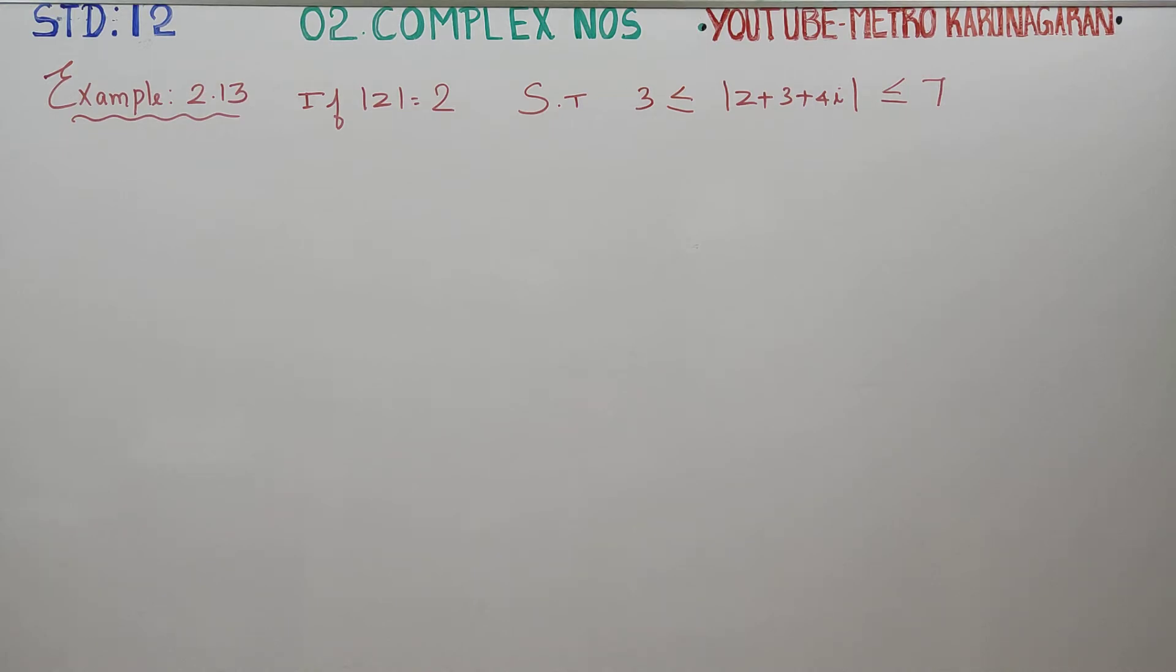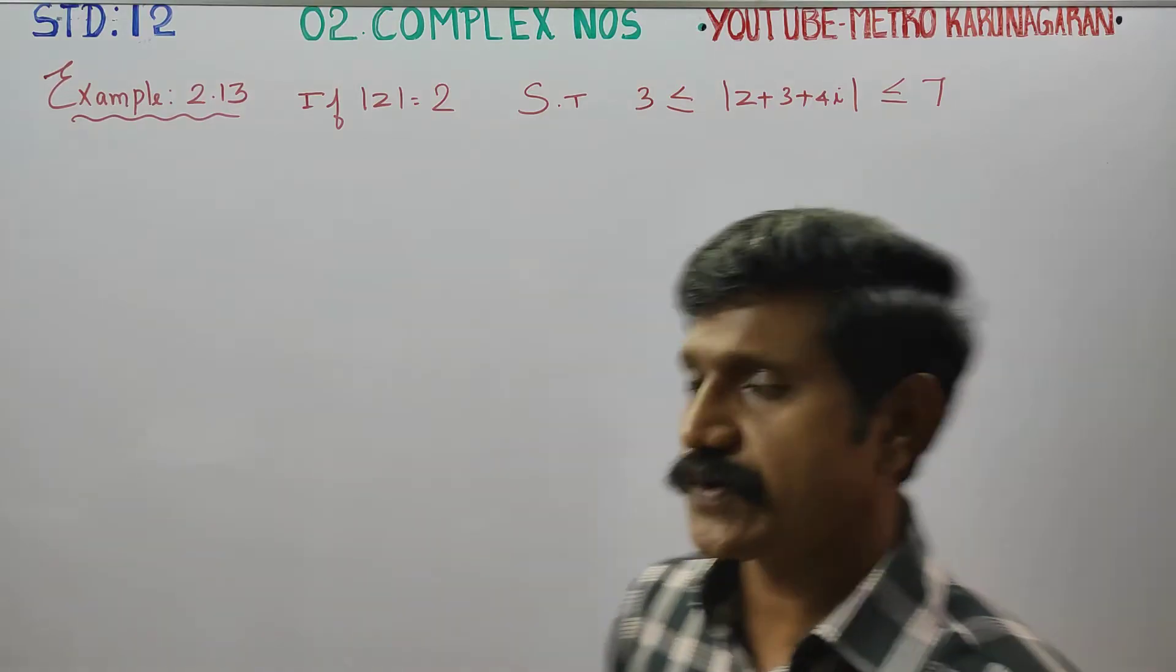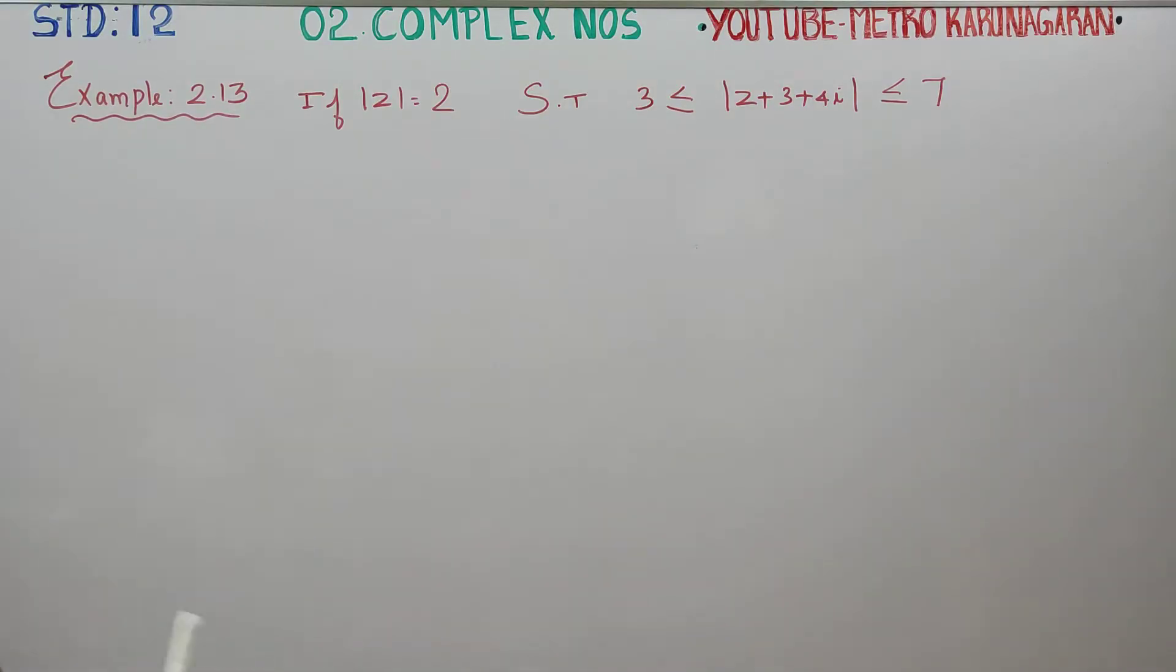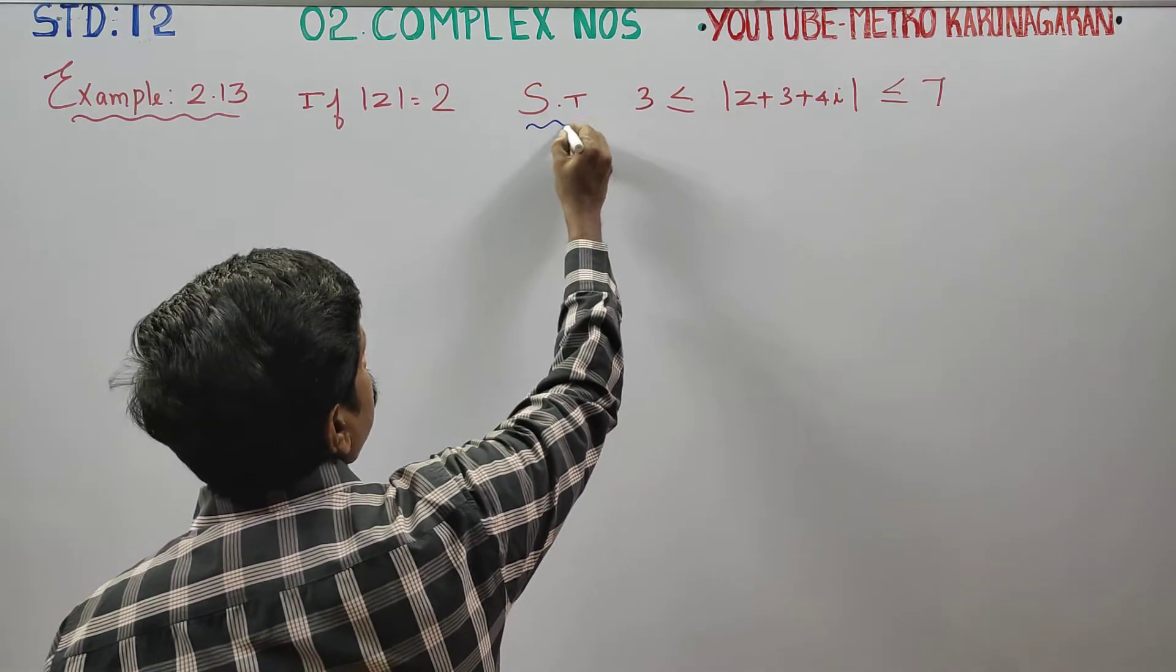Dear 12 standard students, I am Etro Karanagaran. In complex numbers, example 2.13, if modulus of z is equal to 2, we have to show that this inequality is true.